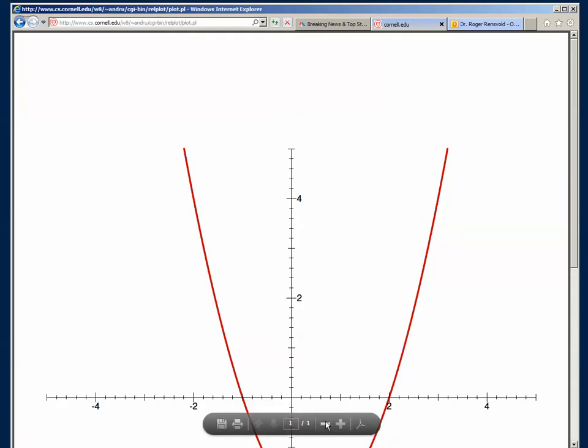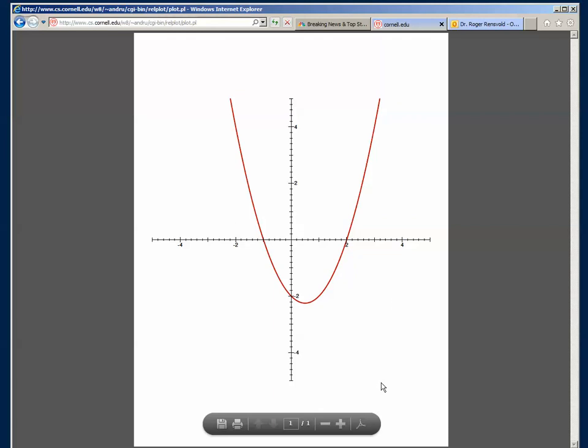Again, we can make our image a little bit smaller. Center it, whatever. And, well, gee. The curve crosses the x-axis at 2 and -1. We're pretty good, huh?